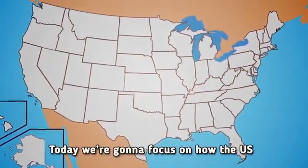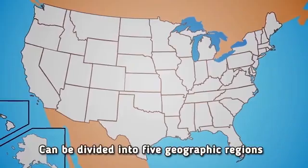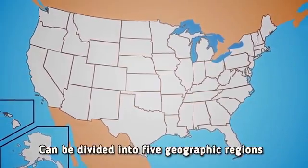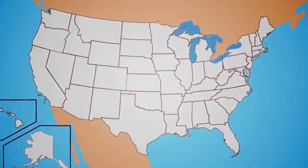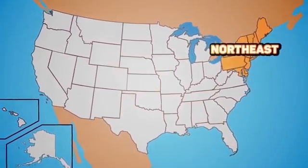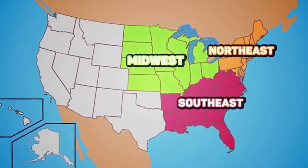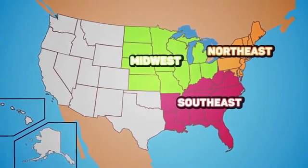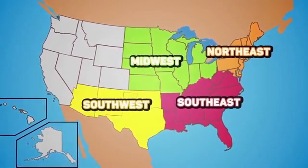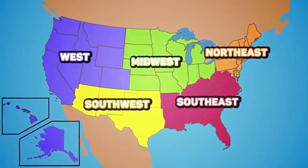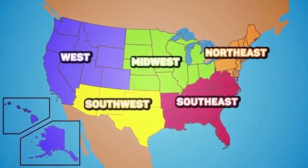Today we're going to focus on how the U.S. could be divided into five geographic regions: the Northeast, Southeast, Midwest, Southwest, and the West. You ready? Let's roll.